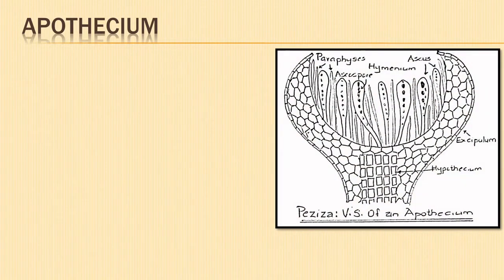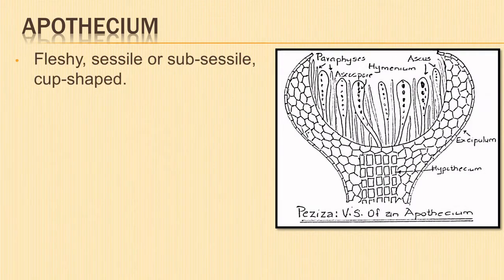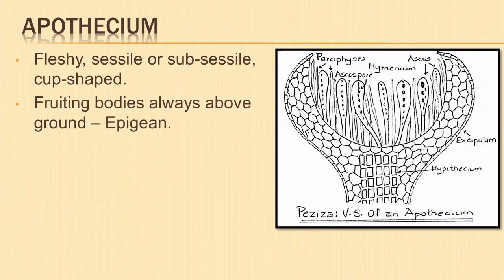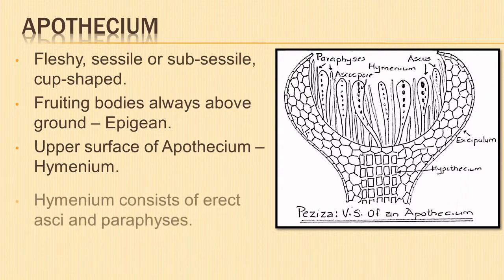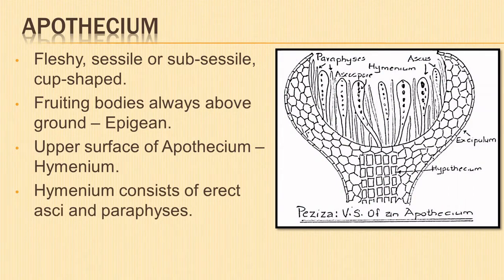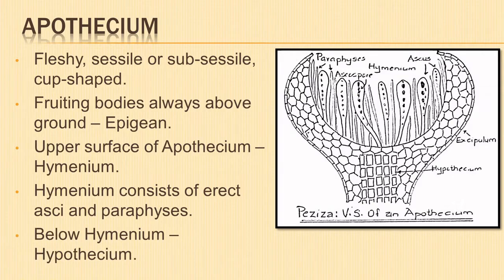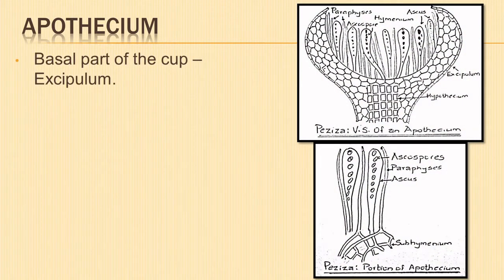Next, we shall look into the structure of apothecium. The fruit body is an apothecium with a fleshy, sessile or subsessile cup or saucer-shaped body. The fruiting bodies are always above ground. A vertical section through the apothecium shows the upper surface known as hymenium, with elongated cells lying at right angles to the surface. It consists of erect asci intermingled with sterile protective hyphae called paraphysis. Below the hymenium is a layer known as hypothecium, running parallel to the surface of the hymenium. The basal part of the cup is known as excipulum.